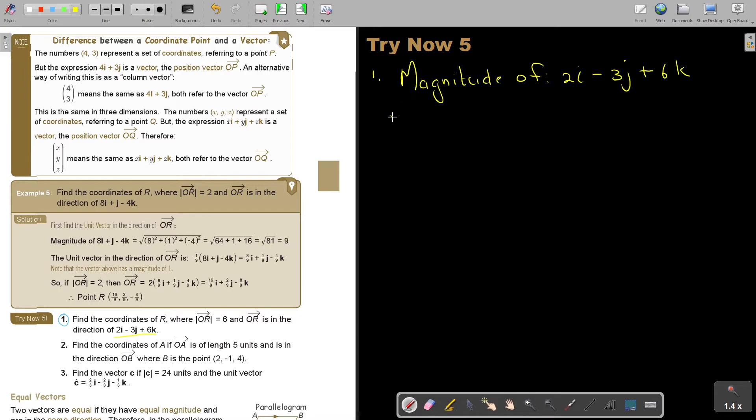And that is going to be 2 squared plus negative 3 squared plus 6 squared. And that is going to be 4 plus 9 plus 36, and that's going to be the square root of 49, which is going to be 7.